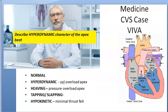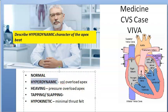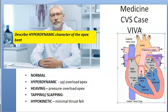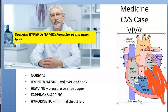Describe the hyperdynamic character of the apex beat. The apex beat will be hyperdynamic if there is volume overload — like in mitral insufficiency, aortic insufficiency, or if there is a ventricular septal defect, or a patent ductus arteriosus. Whenever there is a volume overload, there can be a hyperdynamic apex beat which we can feel.